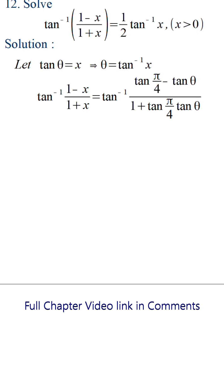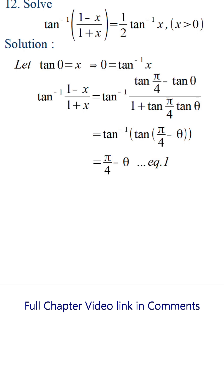We get tan inverse of (tan(π/4) minus tan theta) by (1 plus tan(π/4)·tan theta). This is of the format tan(a minus b), where a equals π/4 and b equals theta. Applying it and simplifying, we get the left hand side equal to π/4 minus theta.